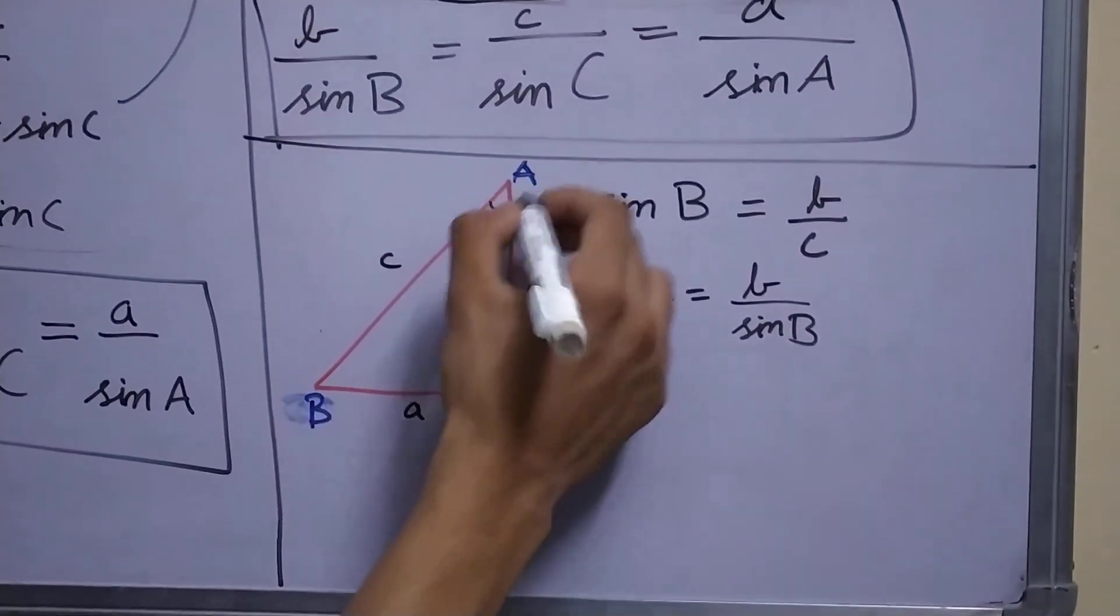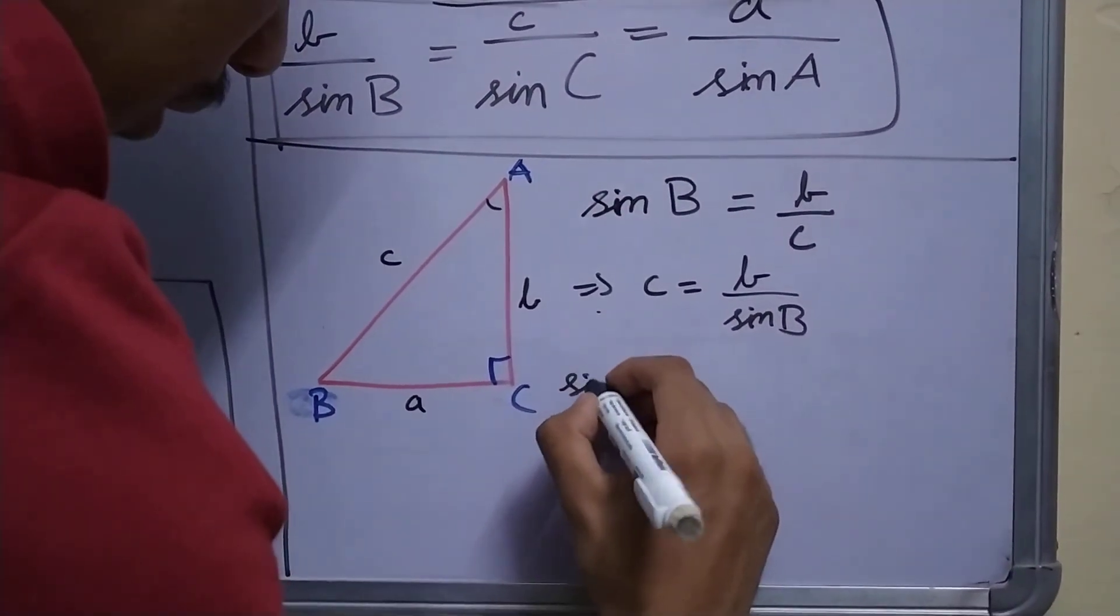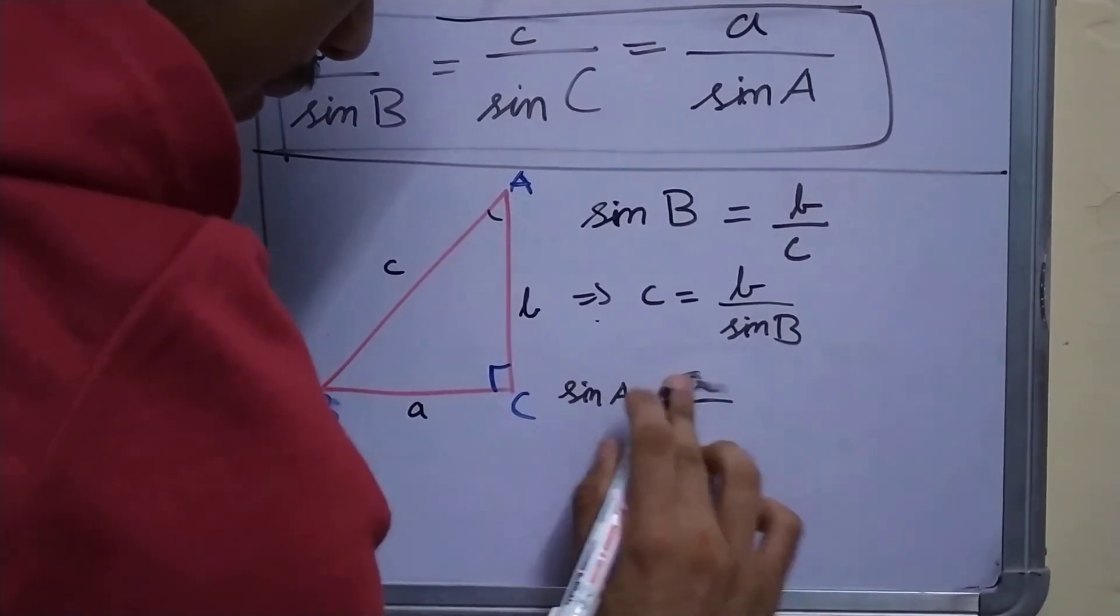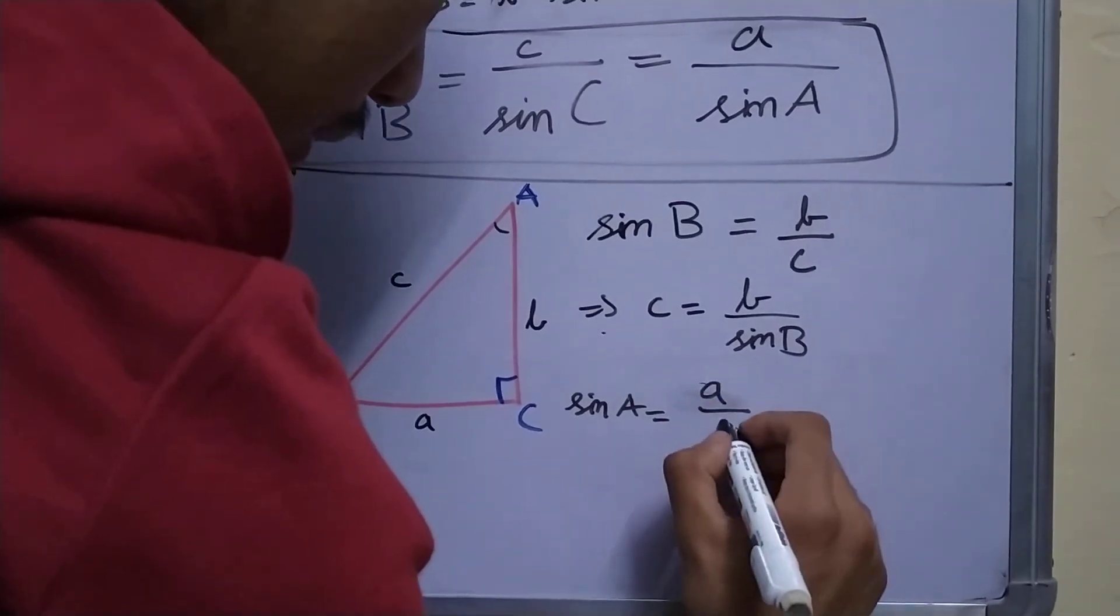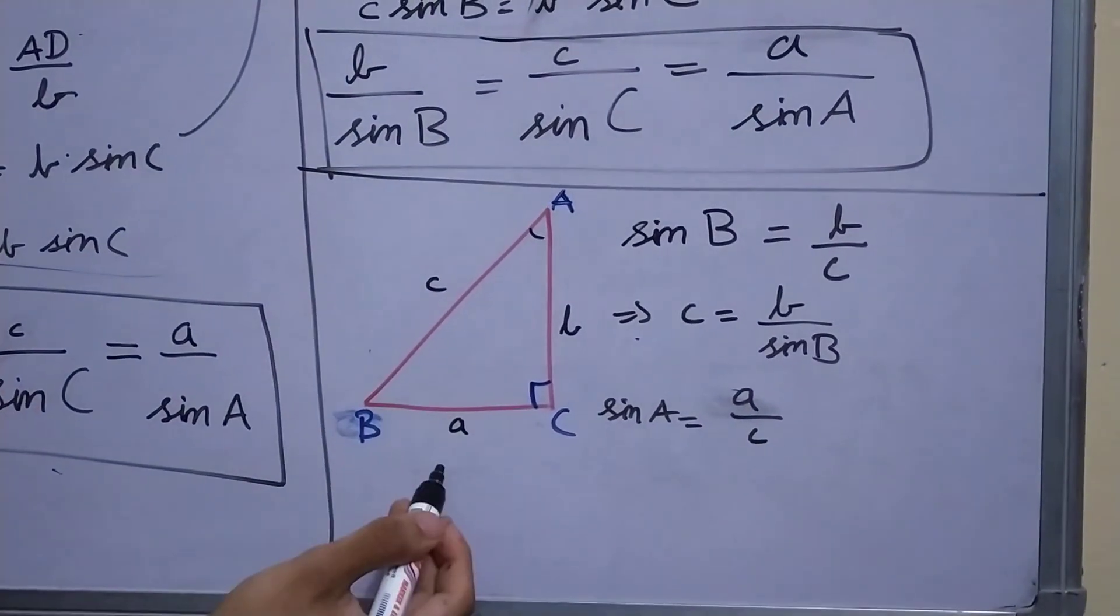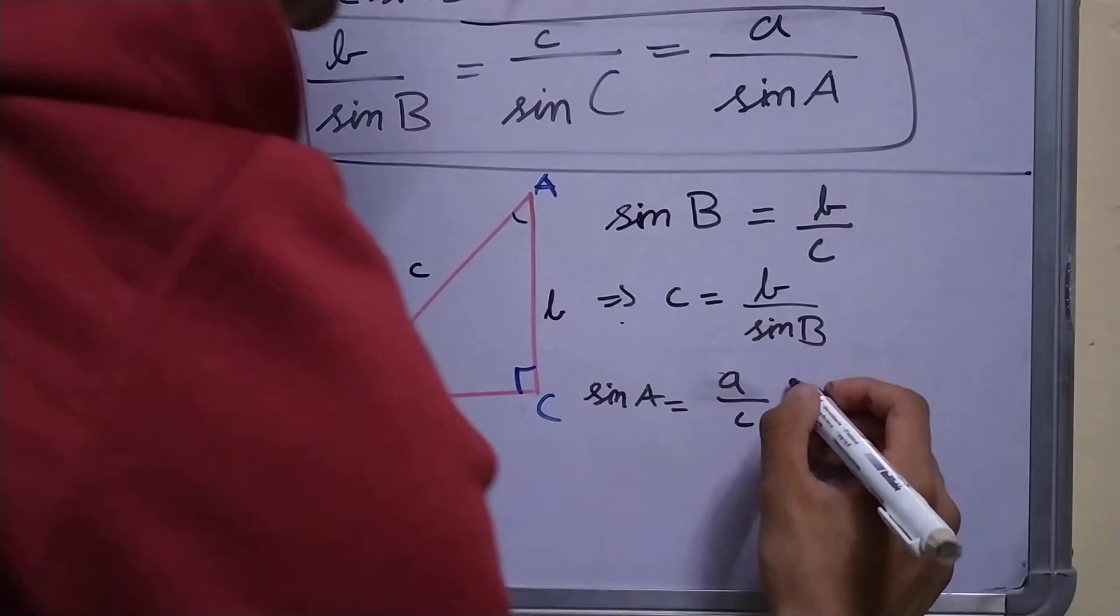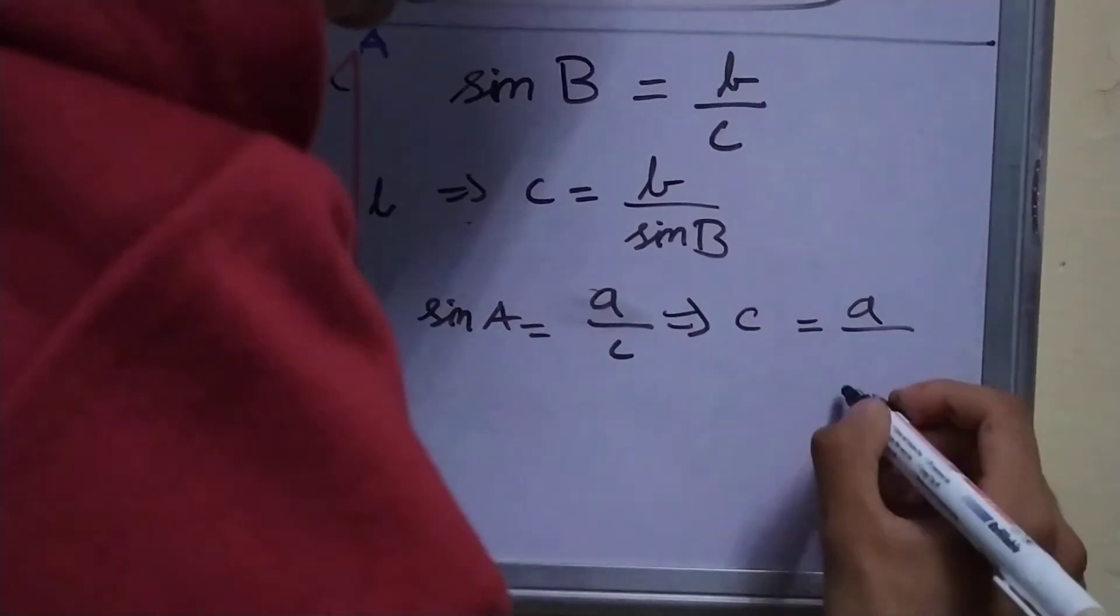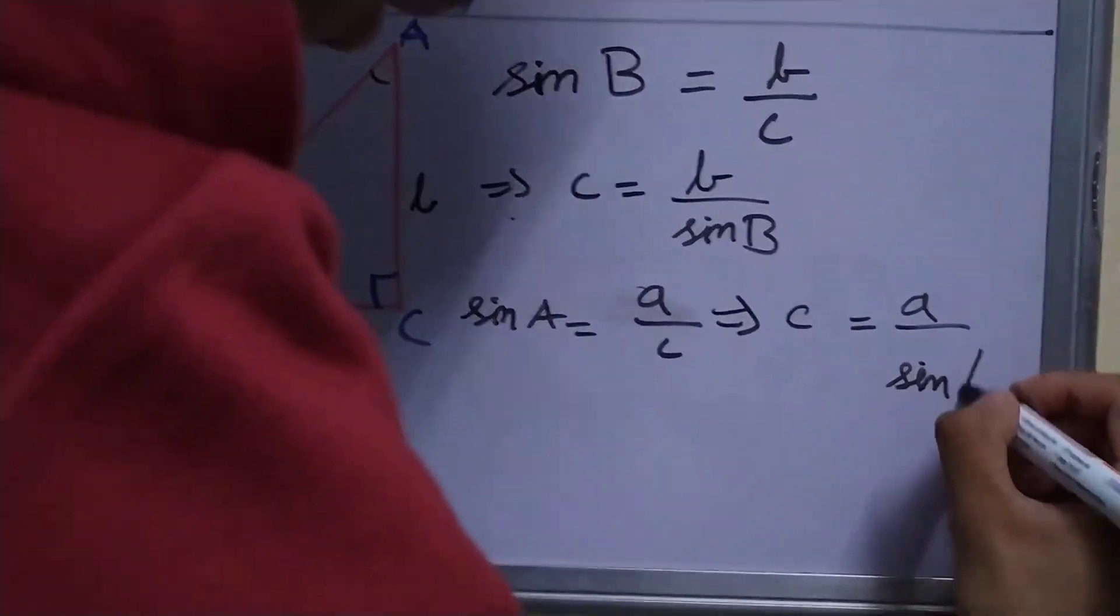And what is sin A? Sin A is a upon c, opposite upon hypotenuse. This implies that c is a upon sin A.